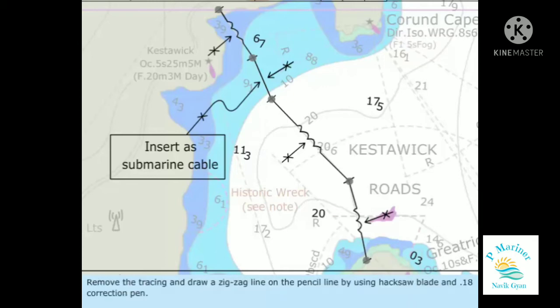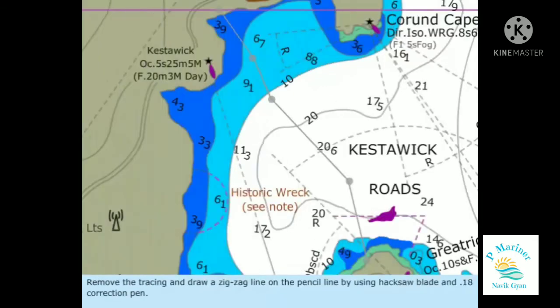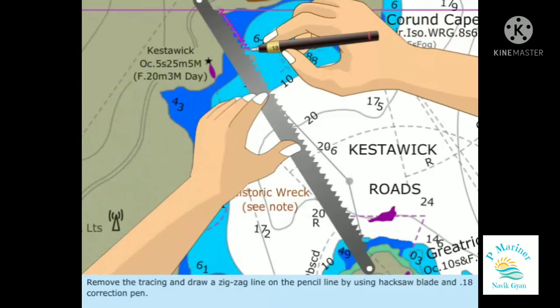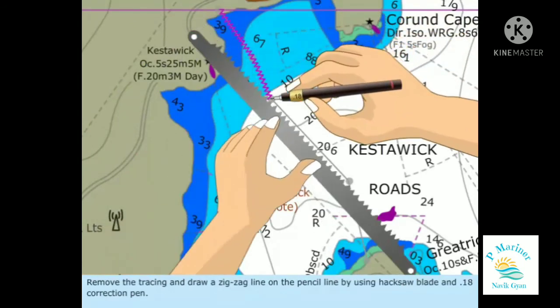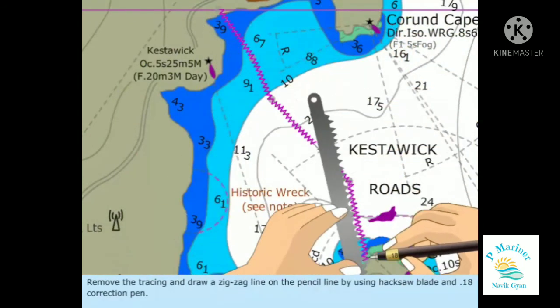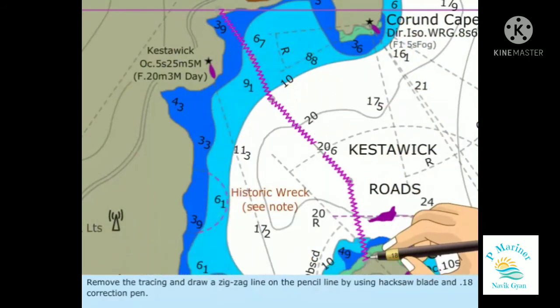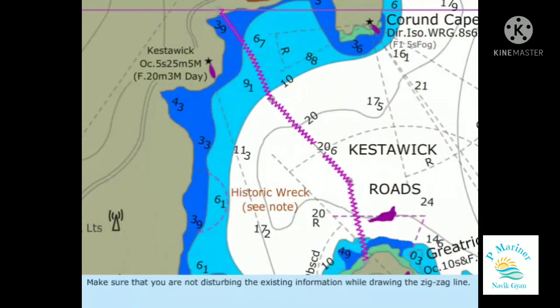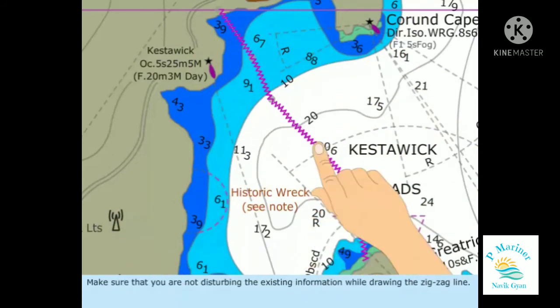Remove the tracing and draw a zigzag line on the pencil line by using the hacksaw blade and .18 correction pen. Make sure that you are not disturbing the existing information while drawing the zigzag line.